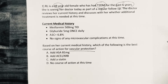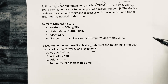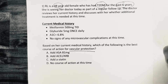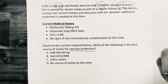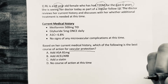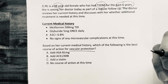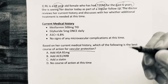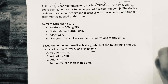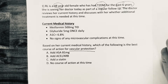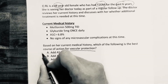Let's look at the first option: aspirin 81 mg. Remember, aspirin 81 mg is not routinely used for primary prevention of cardiovascular disease — there is just insufficient evidence. So we're going to rule this out.